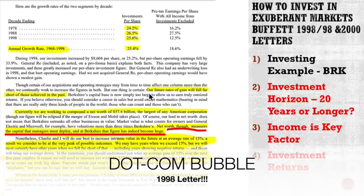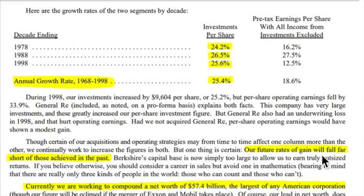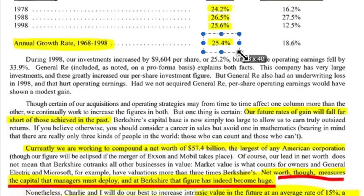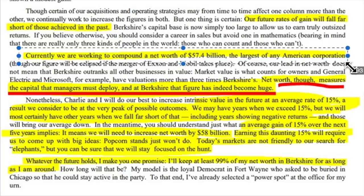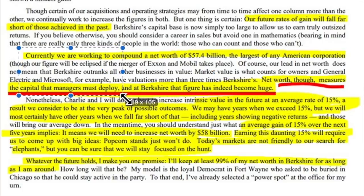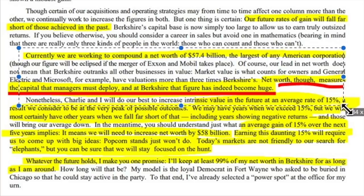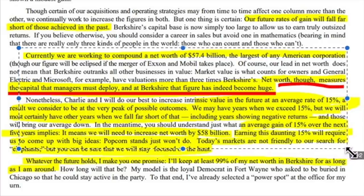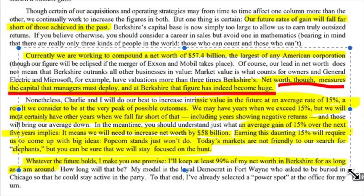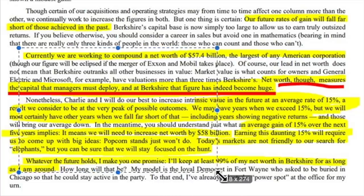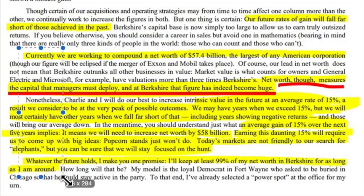From 1998, Buffett said: due to high valuations, our future rates of gain will fall far short of those achieved in the past. This is because of size, but also because of the exuberant valuations in 1998. He didn't reach 25.4% anymore, but he still did well. In 1998, he was working with $57.4 billion in net worth — his book value. And his goal is 15% per year, doubling net worth every five years. He promises to keep at least 99% of his net worth in Berkshire.